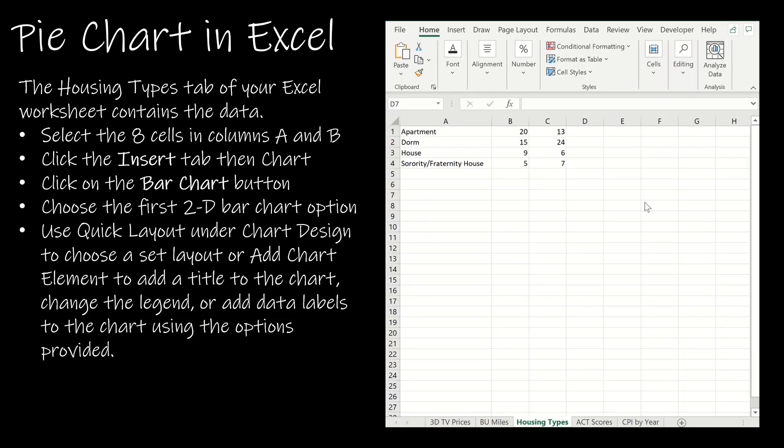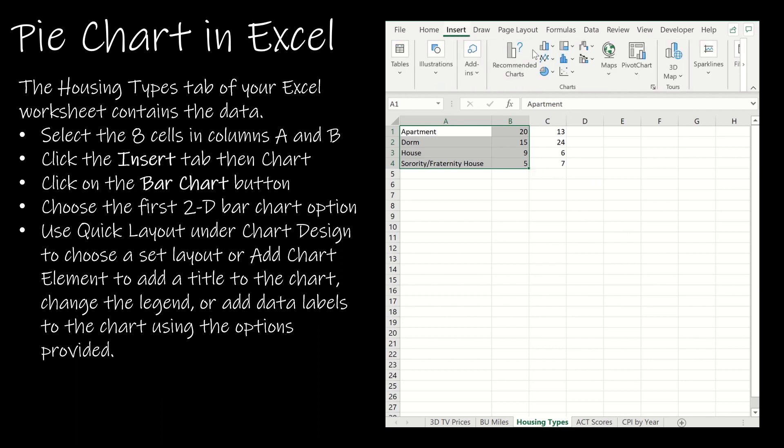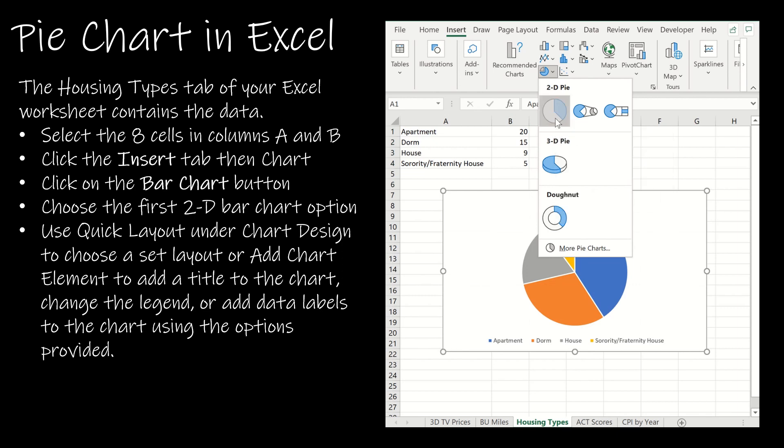If I want to use Excel to create my pie chart, I select the data in the housing types tab of the chapter 2 data spreadsheet. Go to insert—Excel makes it nice and easy with little previews. I know I want to create a pie chart, so I choose the 2D pie chart option.